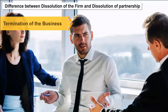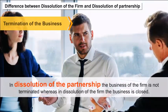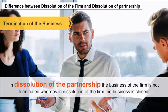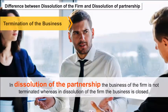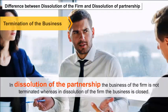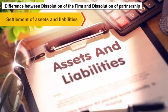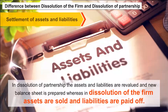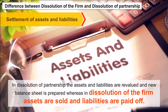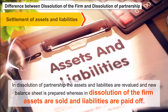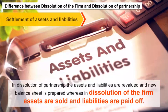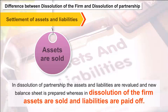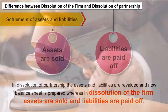Difference between Dissolution of Firm and Dissolution of Partnership. Termination of business: In dissolution of the partnership, the business of the firm is not terminated, whereas in dissolution of the firm, the business is closed. Settlement of assets and liabilities: In dissolution of partnership, the assets and liabilities are revalued and a new balance sheet is prepared, whereas in dissolution of the firm, the assets are sold and liabilities are paid off.